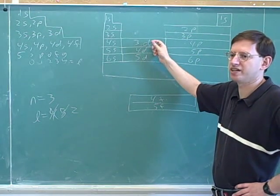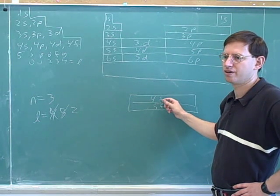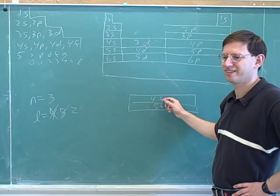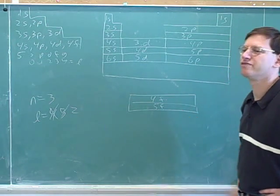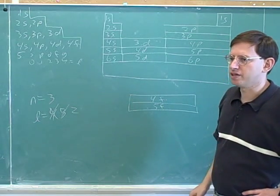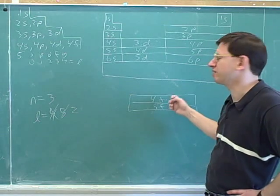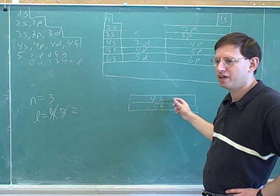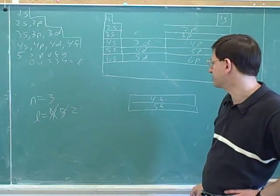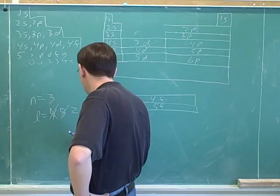How many electrons fit into a d subshell? And into the f subshell? Fourteen. There are mathematical formulas for this, but why bother when you can just read it off the periodic table? The number of columns tells you how many electrons can fit in each subshell.